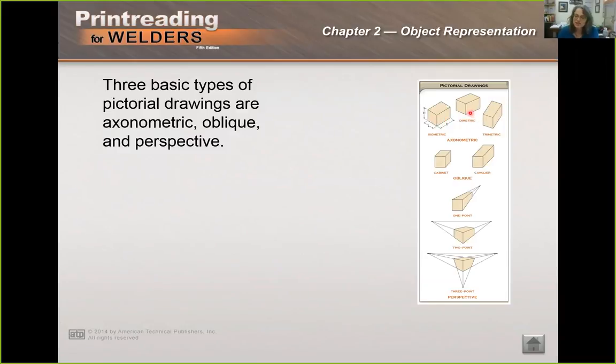Dimetric, two of those angles will be the same. And in trimetric, they're all different. So isometric is by far and away the most common. In fact, you can even buy paper that's got isometric grids to aid you in making isometric drawings. Cabinet drawing is a specific type of oblique drawing, and oblique drawing just means that you're looking at things at an angle.